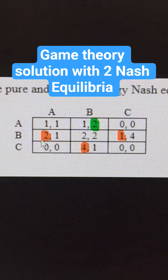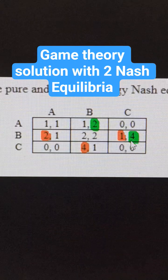If player 1 goes B, they should go C. This is a Nash Equilibria.